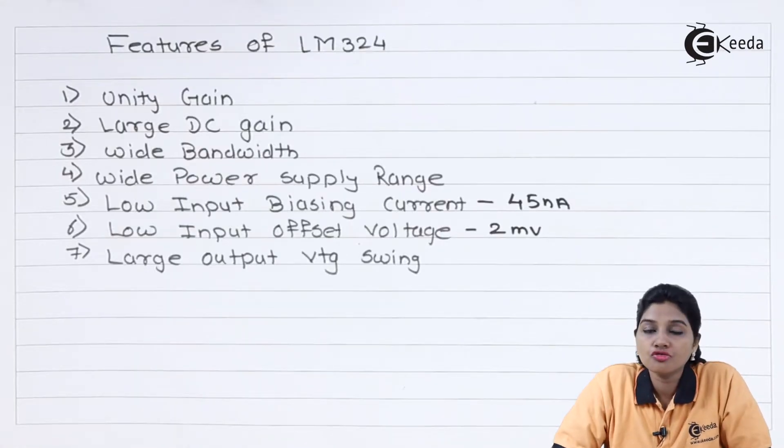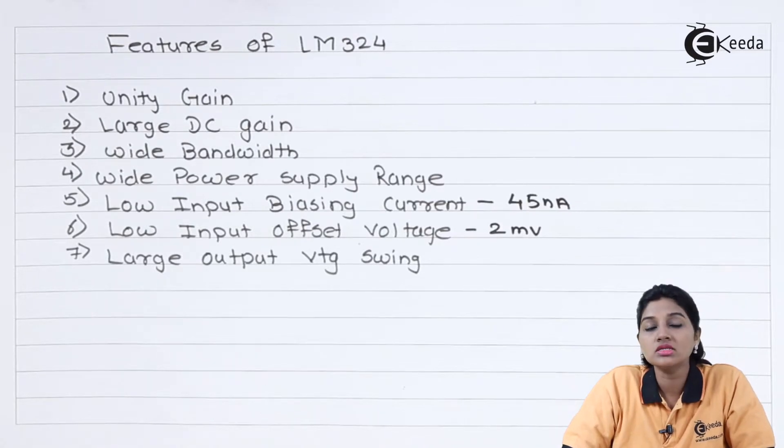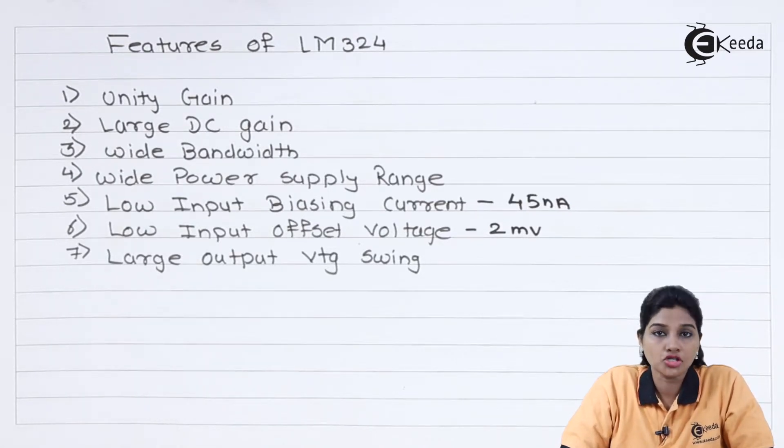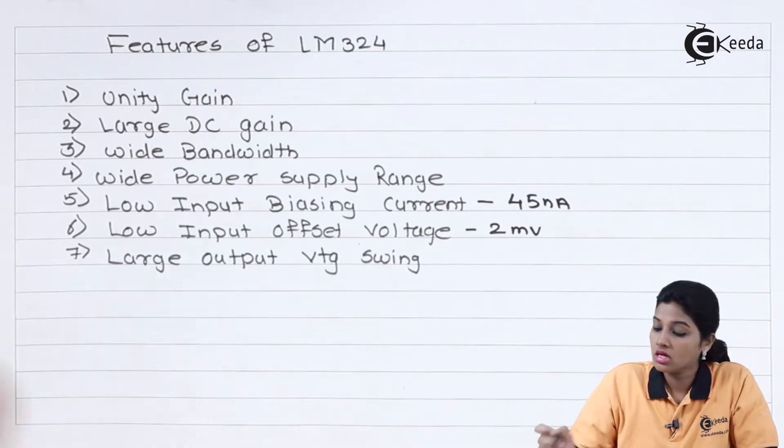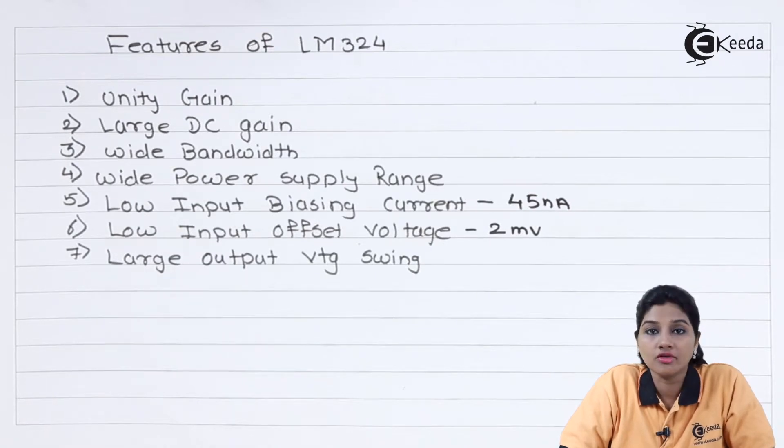Now LM324 provides number of features. One of the features of LM324 is it provides unity gain. It provides internal frequency compensated unity gain and high gain operational amplifier ICs. The second feature of LM324 is large DC gain. It provides large DC gain of about 100 dB.